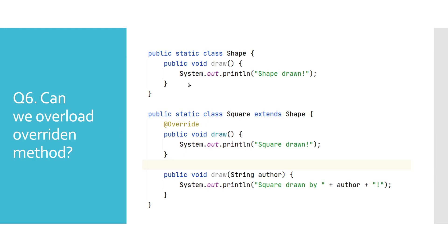As expected, this code compiles successfully. Bear in mind that if we would also have a draw method with a String parameter in the superclass Shape, then we would have both overloading and overriding on both methods in the Square class, while we would only have overloading in the Shape class.